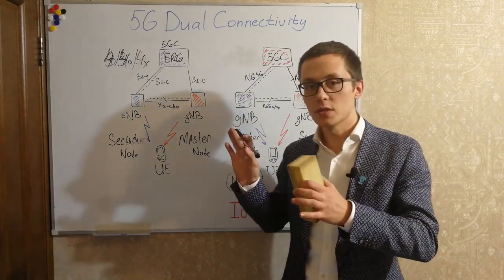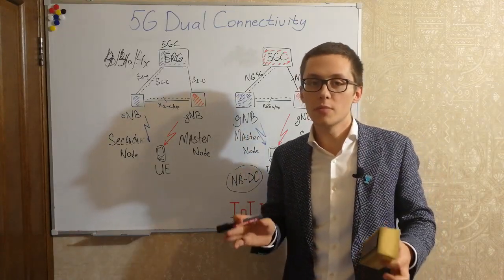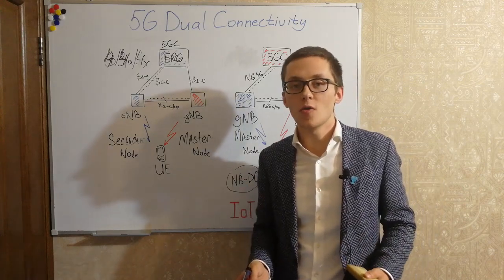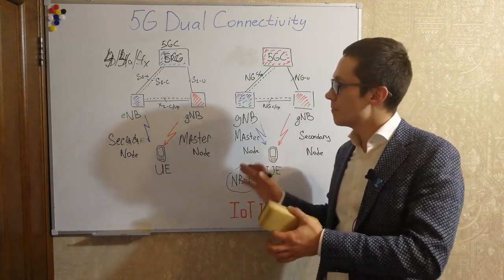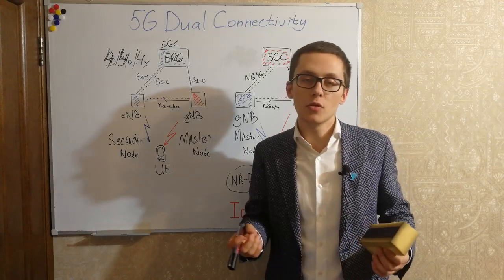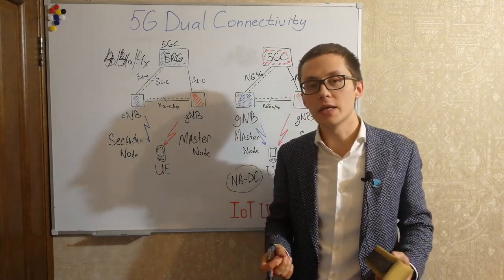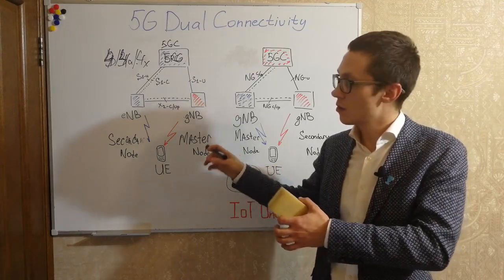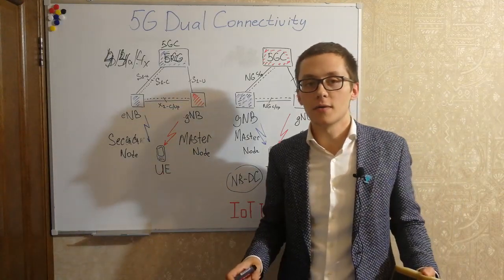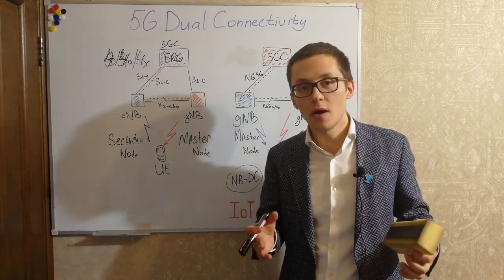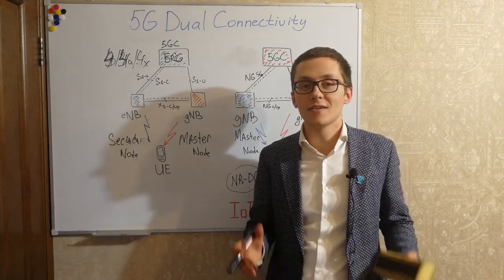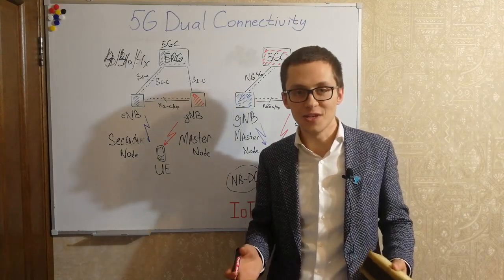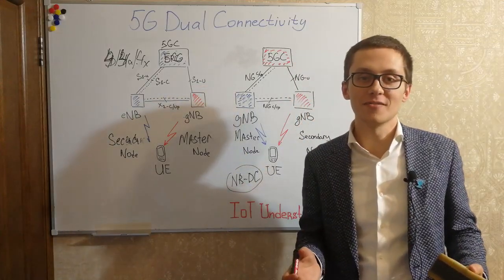All of the advantages of dual connectivity are possible because we use technologies such as split bearer and PDCP packet duplication. That was a short lesson about dual connectivity. If you want to know more about these technologies and how the different options look from the user equipment side, you can watch my second part of the dual connectivity video. Like it, comment below, and if you have any questions you can send me an email. Stay with the IoT Understanding channel. Goodbye!